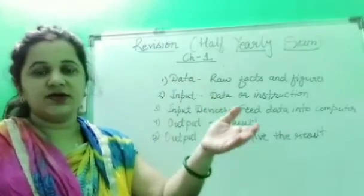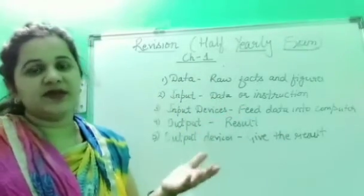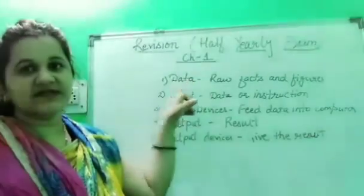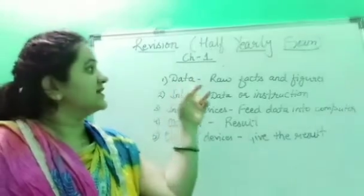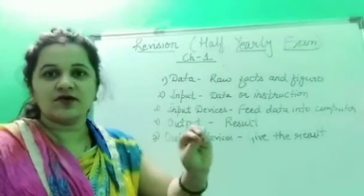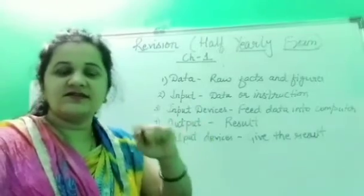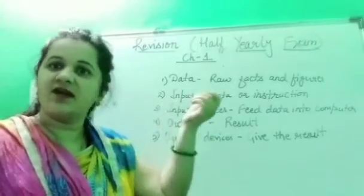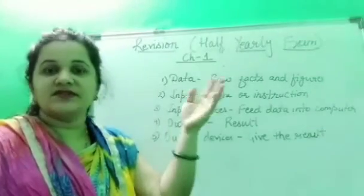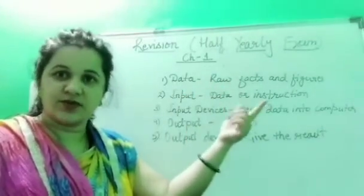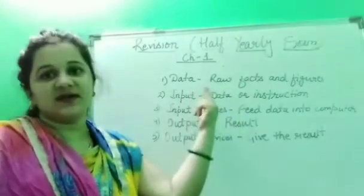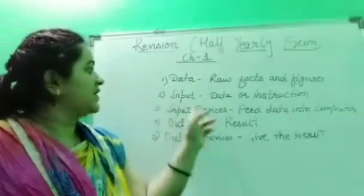Now here are some terms related to the computer which will help you explain how a computer works. The first term is Data — data are the raw facts and figures; until any instruction is given, they are raw. Next comes Input — input is the data or instructions which are given to the computer, and according to those instructions the data gets processed.